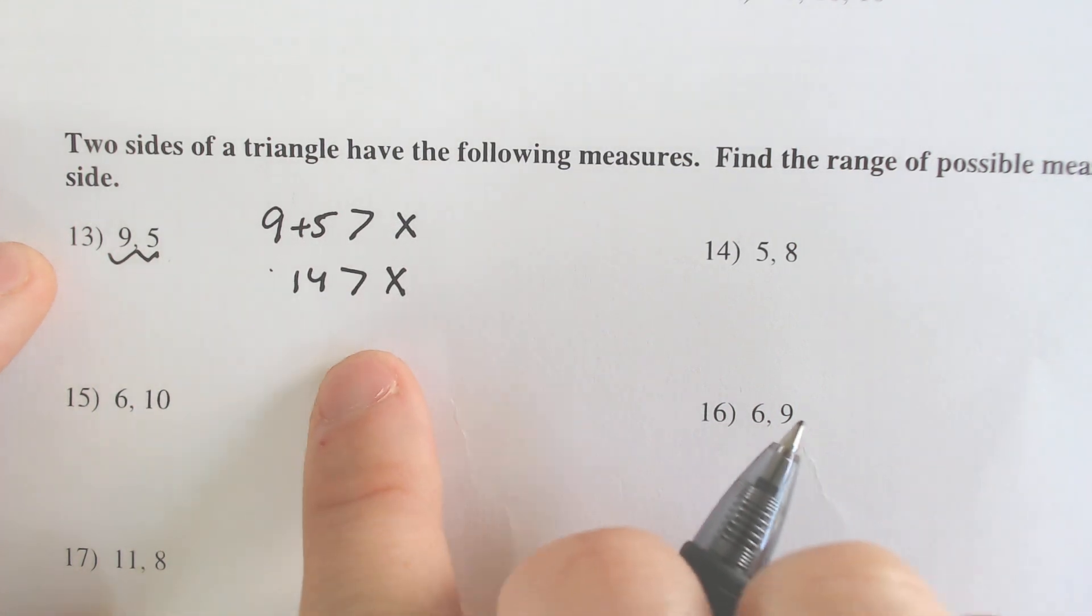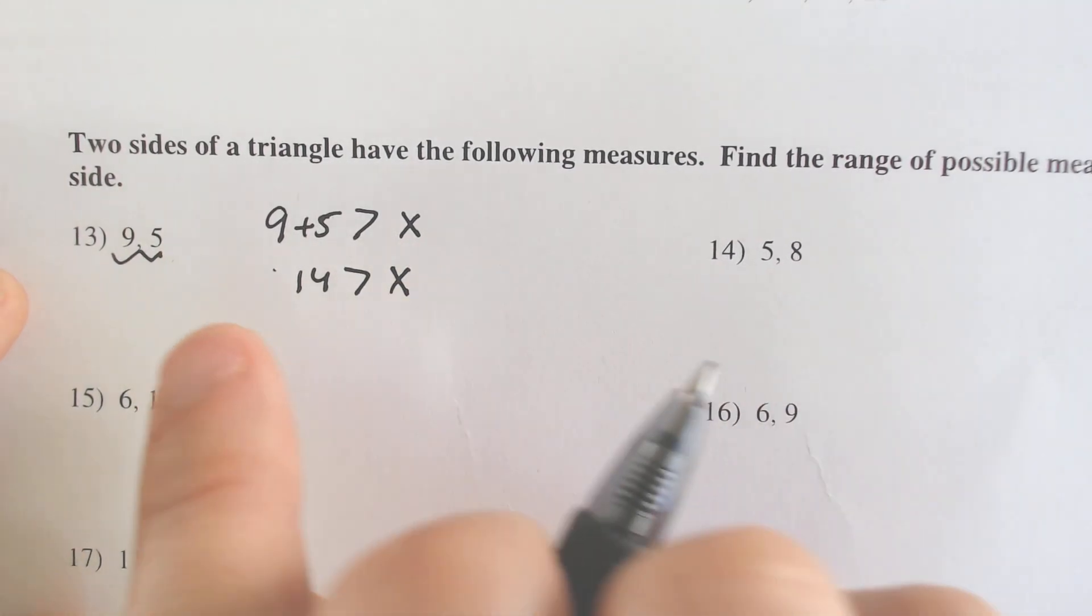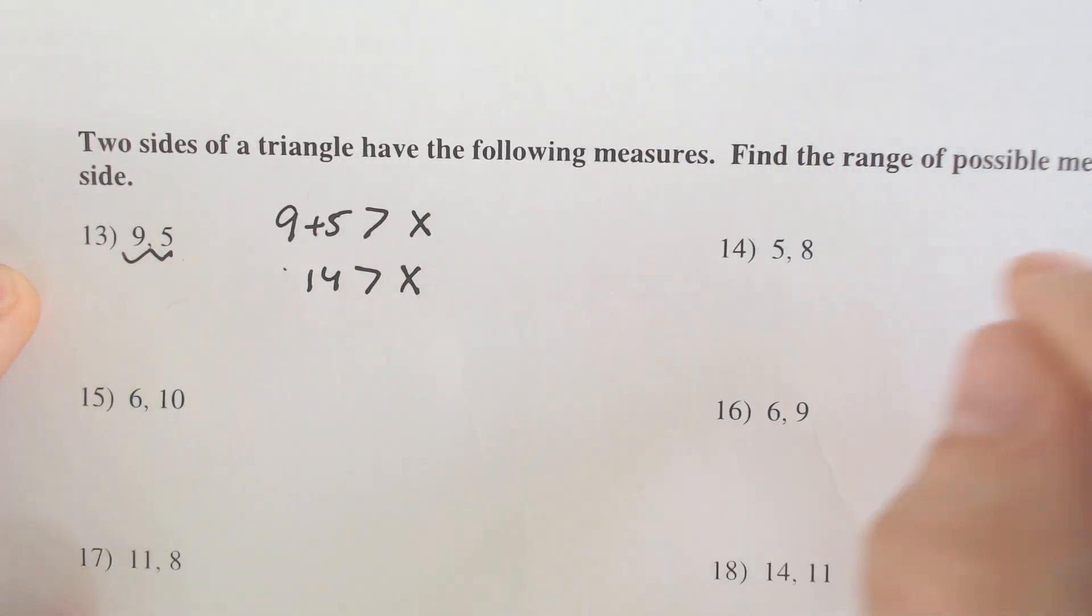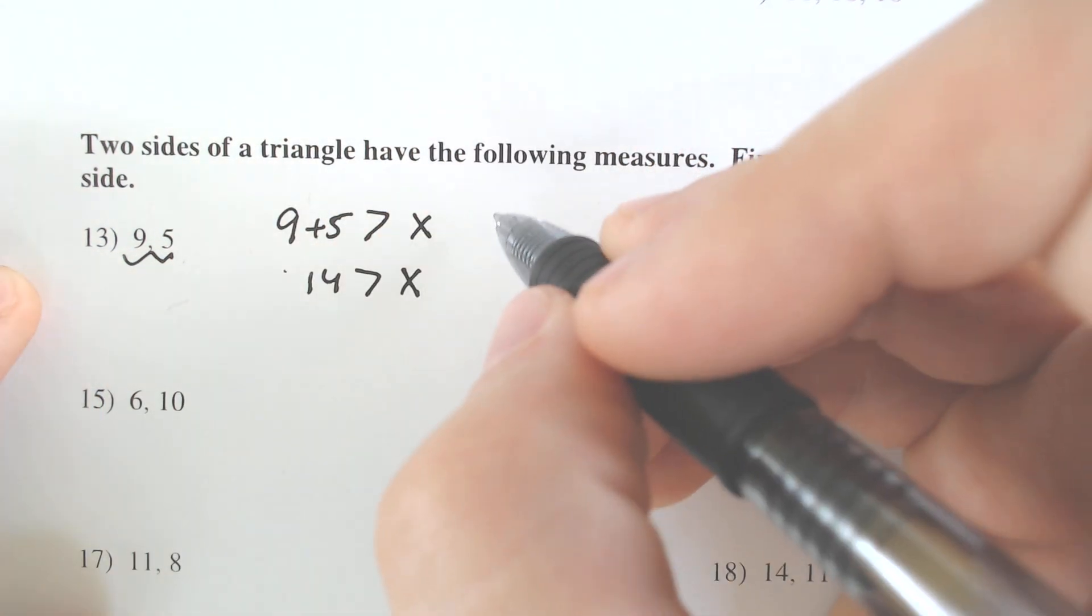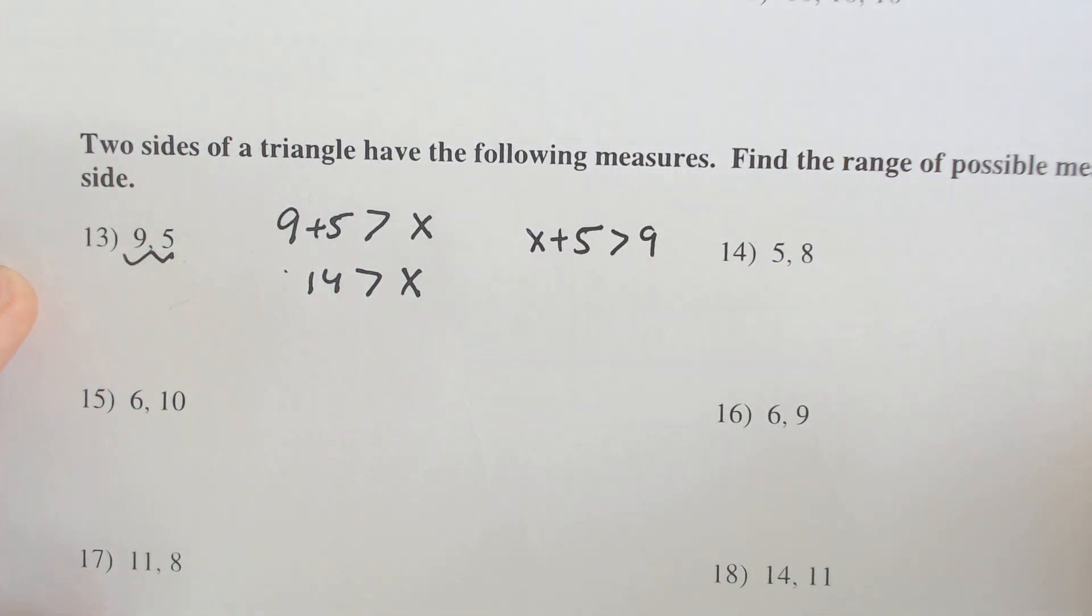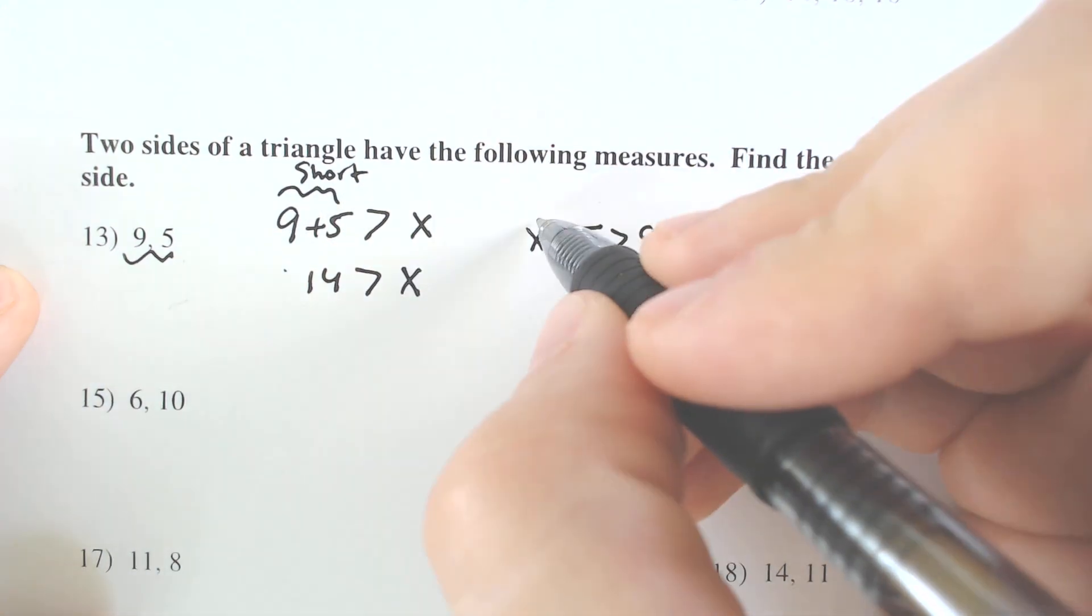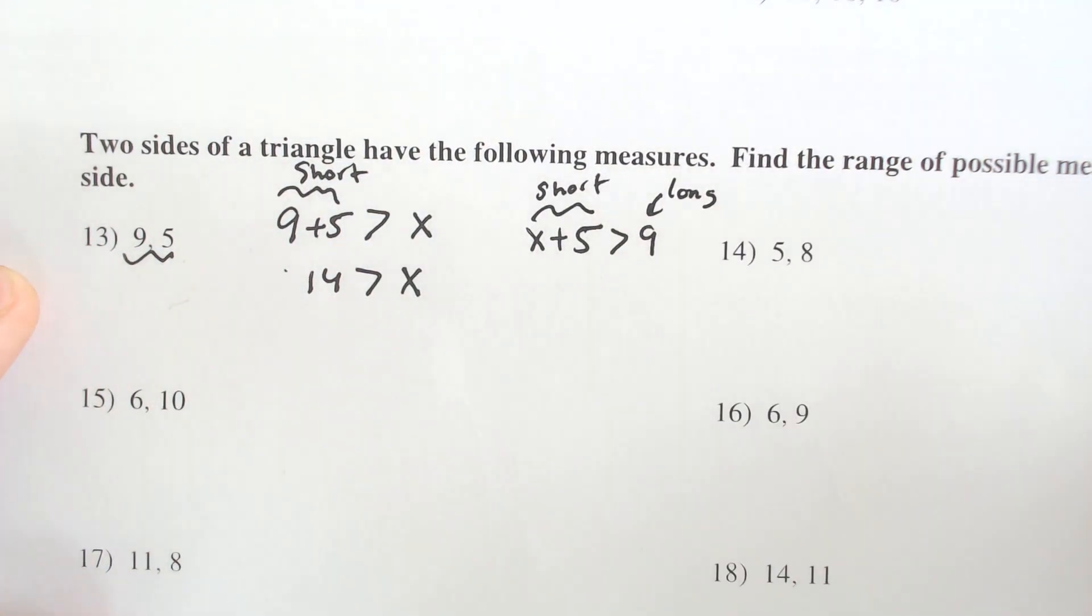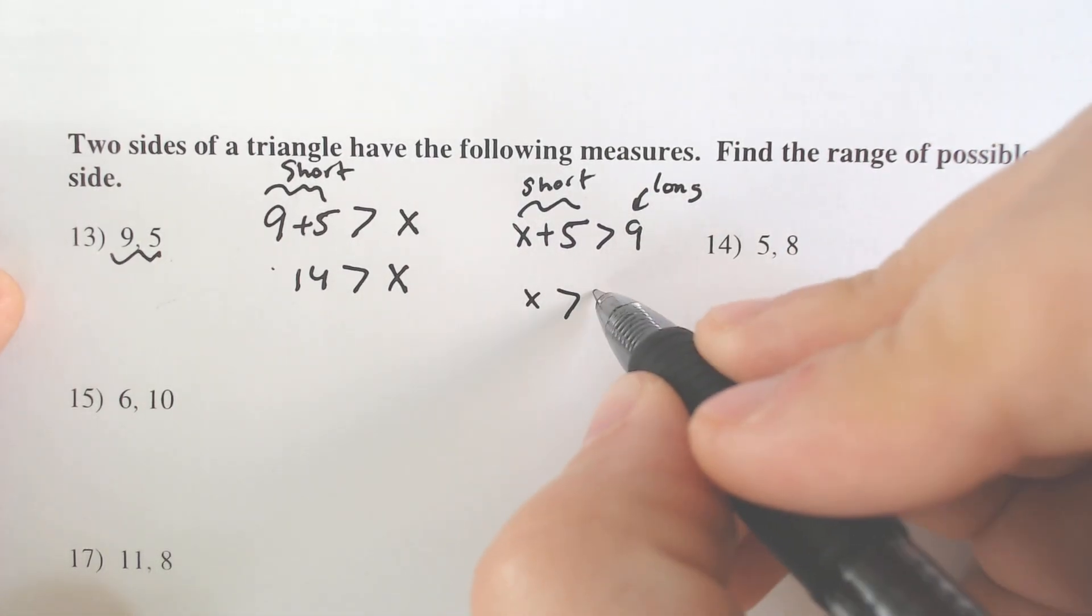Well, what if the third side isn't one of the shorter sides? What if 9 was the biggest side? And we're pretending that X is on the smaller side with 5. Well, that would mean that X and 5 would have to be greater than 9. So here we pretended that these were the short sides, and now we're pretending that these are the short sides, and that this is the longest side right here. And if we solve that, we find that X has to be greater than 4.